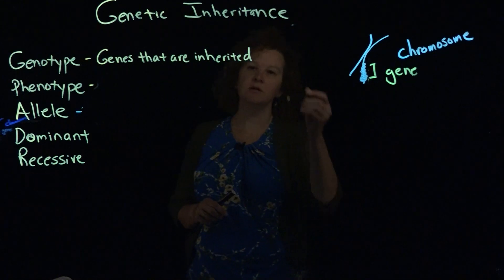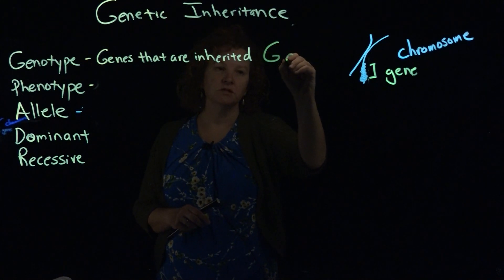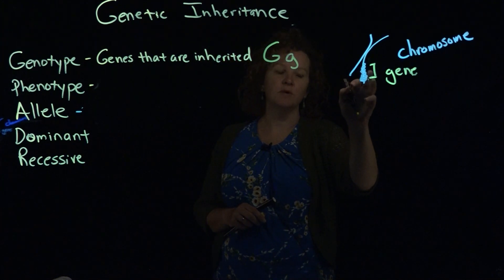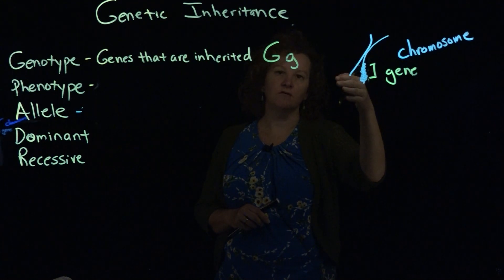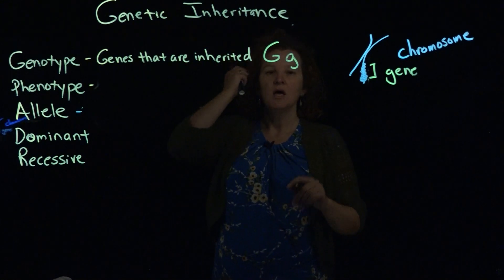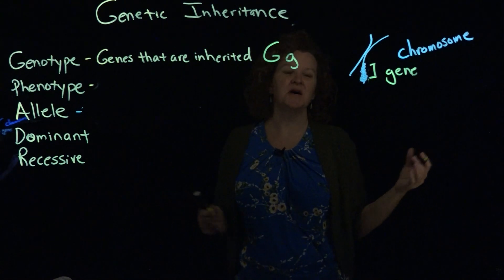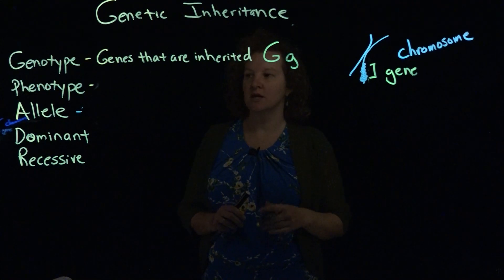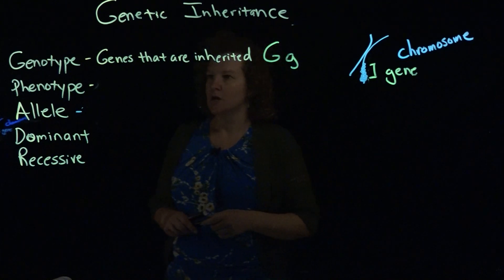So genes are inherited, and typically we use a letter system — I'm going to use a kind of artificial system here. Remember, you get a gene from your mother's side and a gene from your father's side, so half of your chromosomes come from the mother and half from the father. We just use simple letters as a shorthand method rather than writing out the whole A, T, C, and G combination, which is thousands of bases long. The letters track which gene it is and what it means.